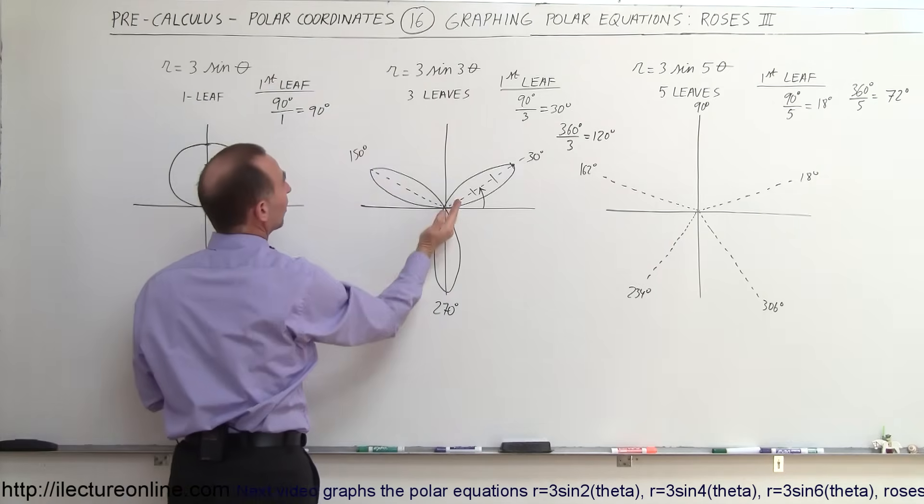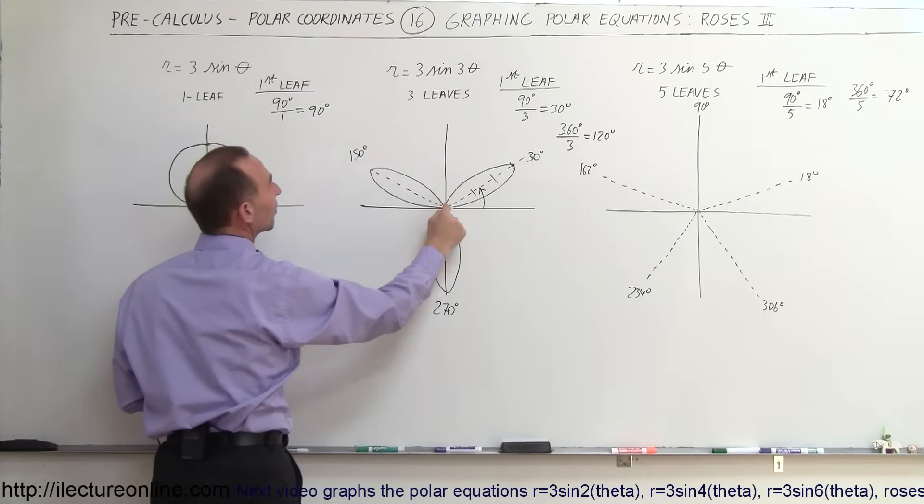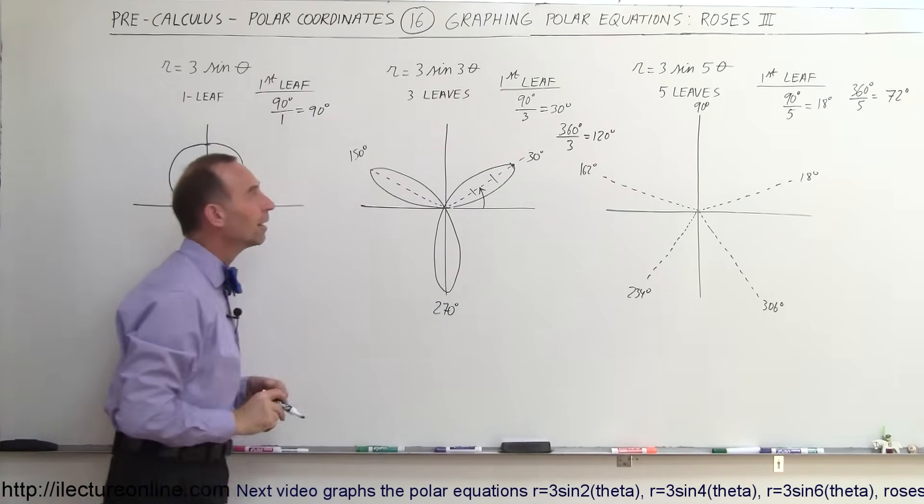Of course, the number 3 in front simply determines how big each leaf is, how long each leaf is.